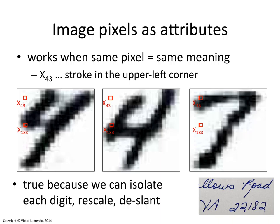You can also deslant them or normalize the slant. Different people write with different slants, but it's a fairly easy vision-based transformation to make all the digits appear upright or have the same slant. Once you do that, pixels have a very well-defined meaning — you expect pixels to be consistent across digits. That's why it works to use pixels as attributes in this domain.